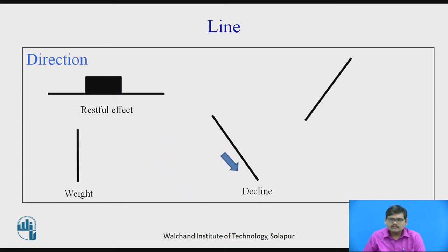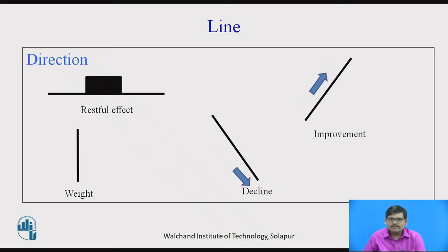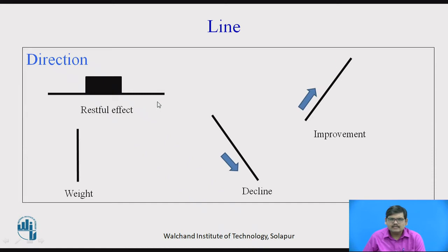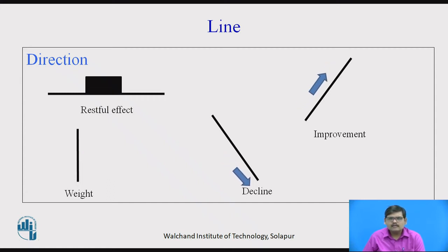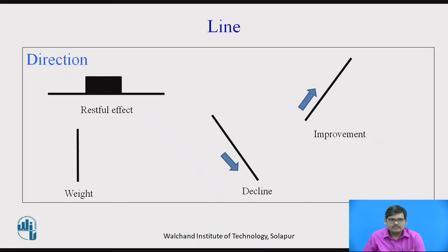A line inclined upwards shows improvement, ascent, growing up, and so on. Merely changing the inclination of the line, we can change the emotion or idea being conveyed by the line. A horizontal line suggests stability; a vertical line suggests gravity or weight. As far as clothing is concerned, a person wearing a shirt with vertical lining looks quite active — the vertical lines make the person look active.